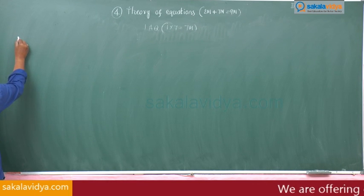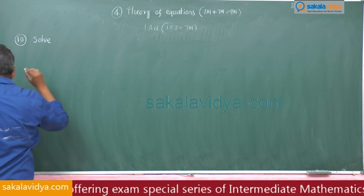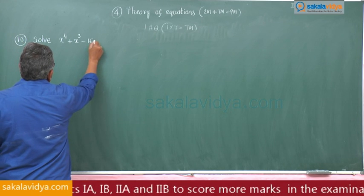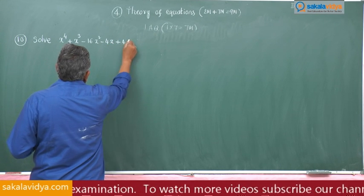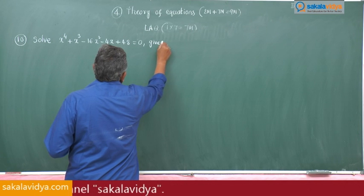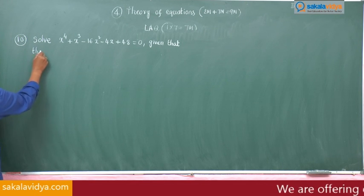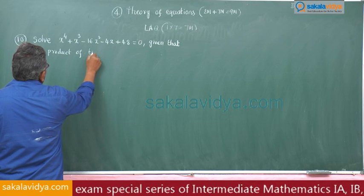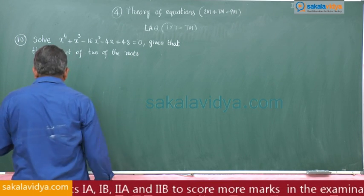10th question: solve x to the power of 4 plus x cubed minus 16x squared minus 4x plus 48 is equal to 0, given that the product of two of the roots is 6.